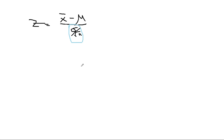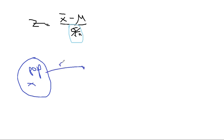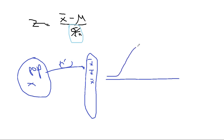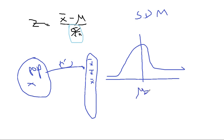The SDM is the sampling distribution of the mean. If you have a population where the variable is X, and you start taking samples of size n, each time calculating X-bar, and you repeat that until you've taken all possible X-bars of size n, you can create a distribution of these X-bars. This is called the SDM — the sampling distribution of the means.